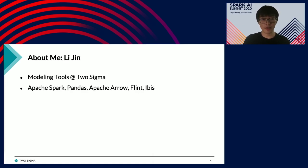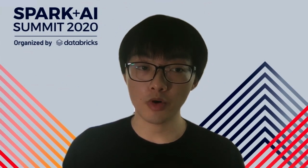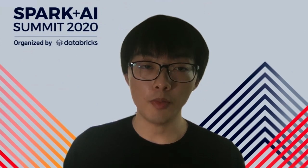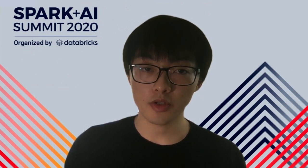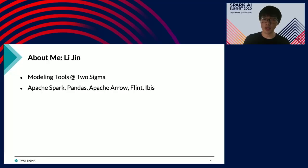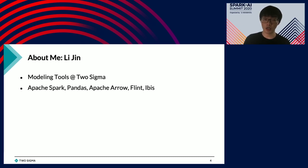A quick introduction about me. My name is Li Jing. I am a software engineer working for a technology firm called Two Sigma. At Two Sigma, we apply technologies like computer science, statistics, and machine learning to investment management. My team is called Modeling Tools, and our mission is to provide the best modeling experience for data scientists at Two Sigma. Our team loves open source software. I have contributed to many projects, including Apache Spark, Pandas, Apache Arrow — a cross-language in-memory data format — Flint, a time series library on top of Apache Spark, and of course IBIS, the topic of today's talk.